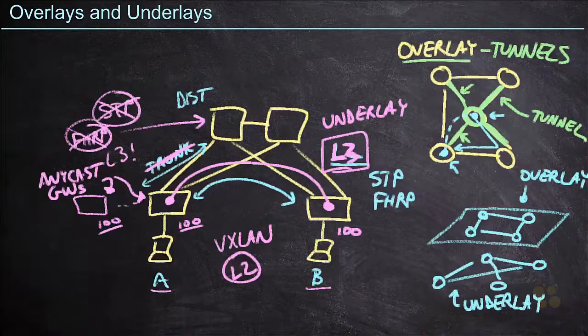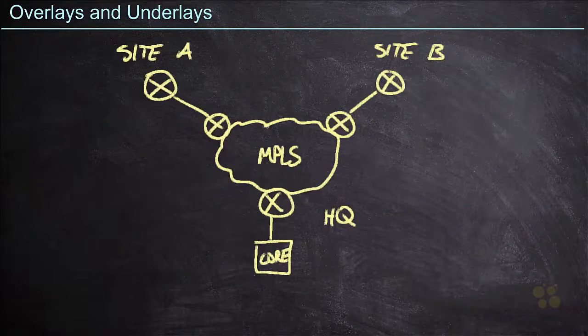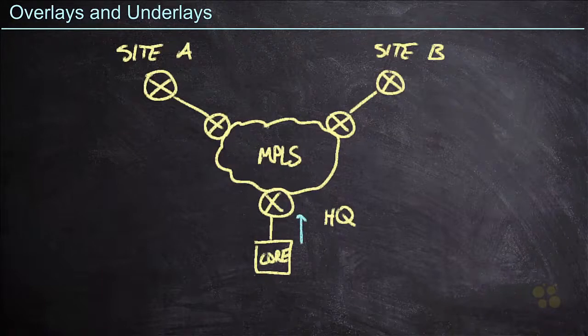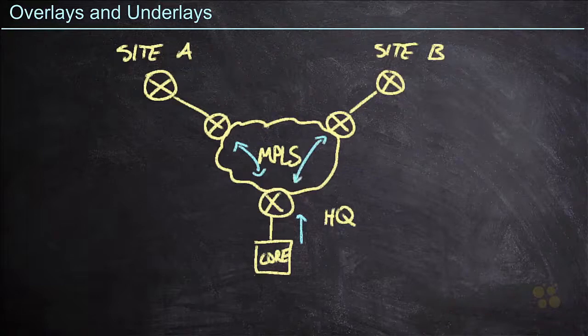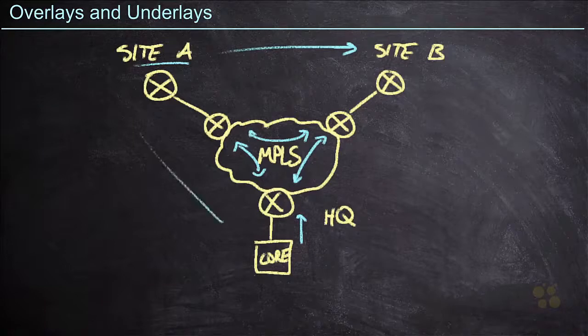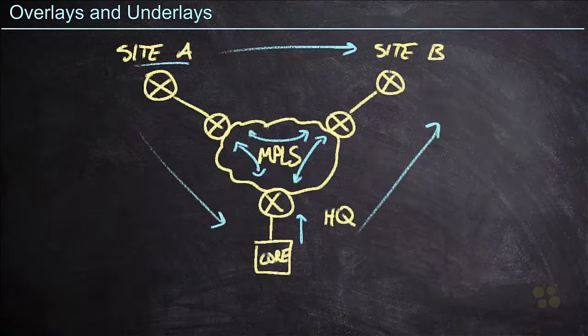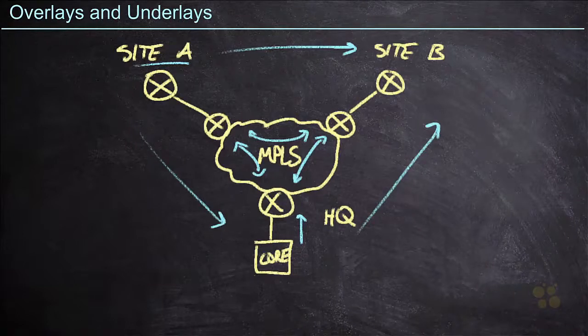Now this is great for layer two, but what can we do from a layer three perspective? Well, let's think about an MPLS domain. In most cases with MPLS, we are going to share our routes with our service provider and those routes will get shared among all of the service provider routers. This allows, for example, site A traffic to reach site B via the MPLS cloud, rather than having to get sent down to the core and back up, which would be inefficient. But the downside to this is that the MPLS provider now needs to know about every single subnet in my environment.